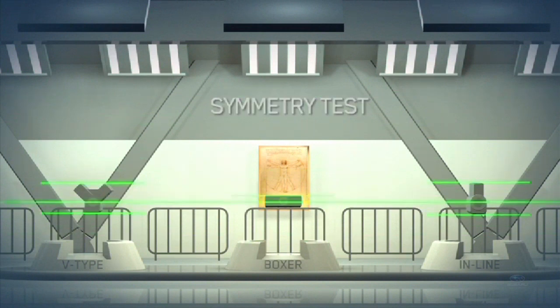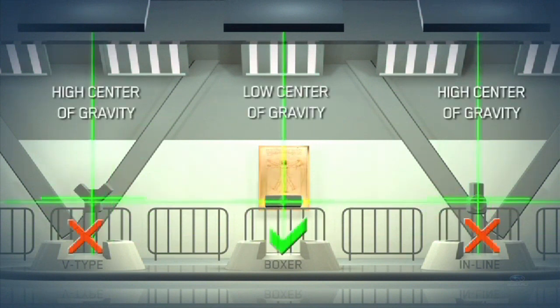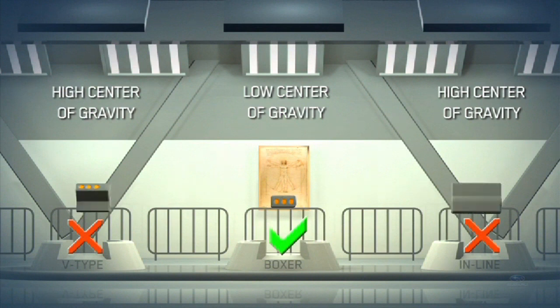The V-Type and inline engine designs have a higher centre of gravity than the flat design of the Subaru Boxer engine.